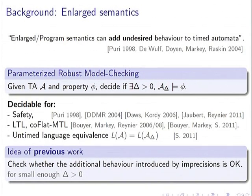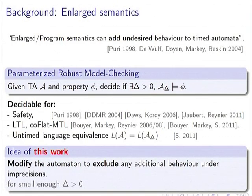In all previous work, the idea is to check whether the additional behavior introduced by imprecisions is harmless — for example, whether the enlarged automaton is still safe. But in this work we adopt a different approach: we don't want any additional behavior. We want to modify the automaton to systematically exclude any additional behavior under imprecisions.